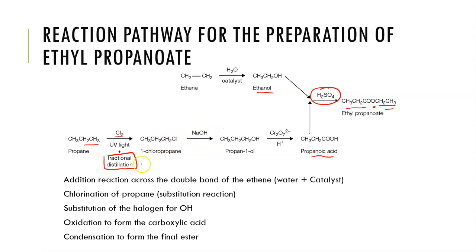So we would actually have to fractionally distil to get just the chloroalkane that we're after. This will often come up as a subsidiary question — not in the pathway itself, but asking perhaps what would be considerations in that first step to ensure that you got only the one substituted chloropropane.